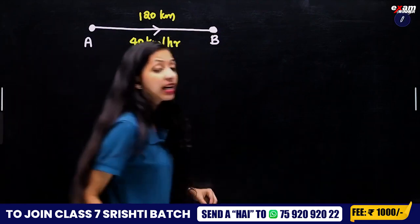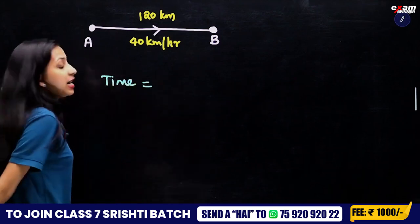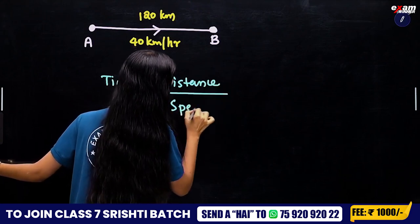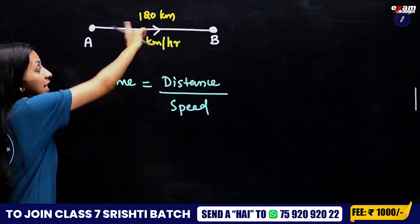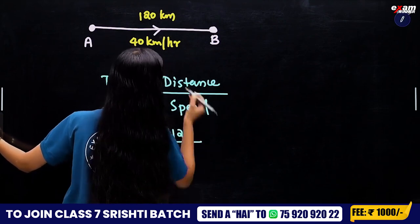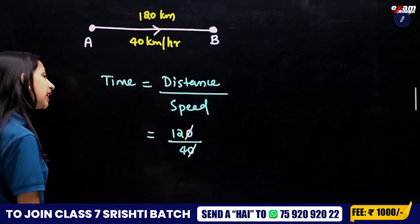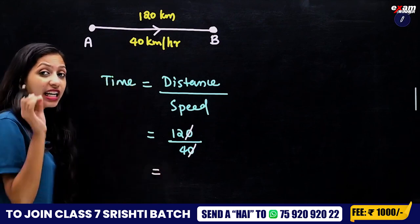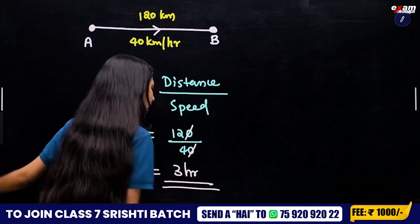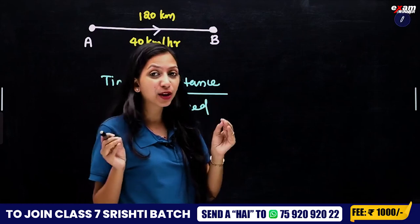How long is this time? Time is equal to distance divided by speed. The time is 120 divided by 40, which gives us 3 hours.